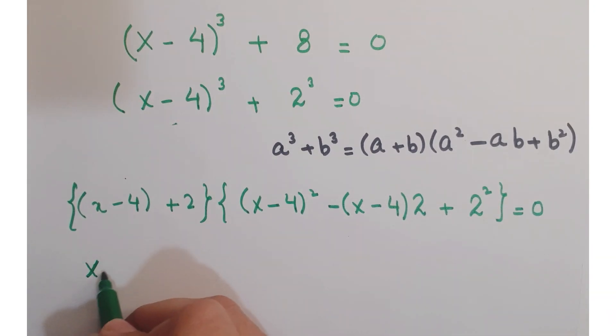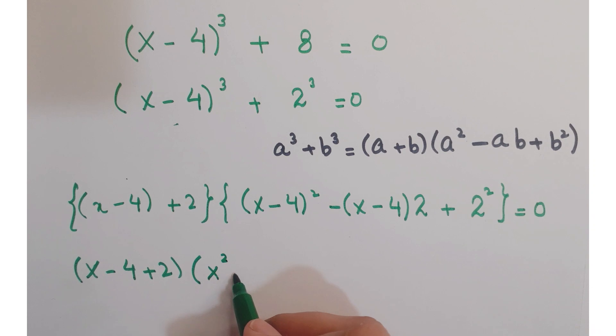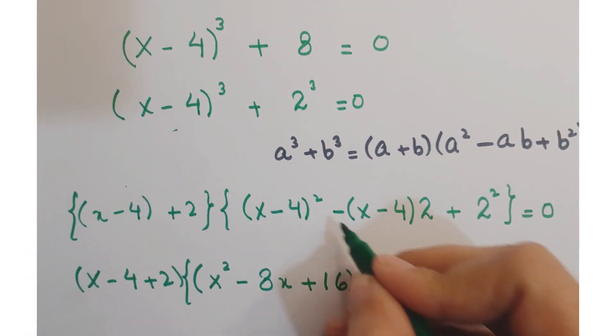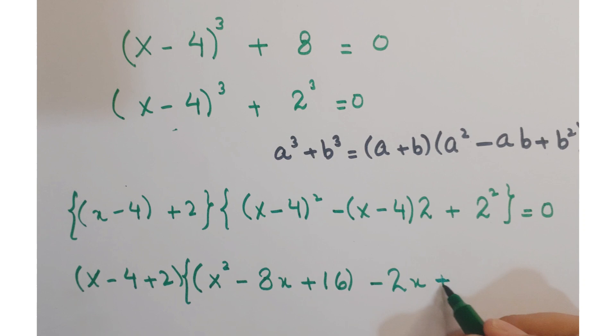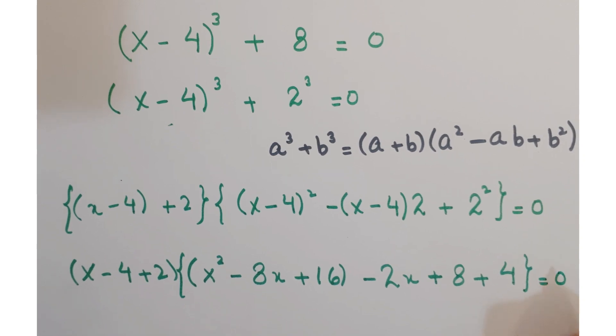You can write it as x minus 4 plus 2. Here you can expand it by applying the algebraic identity a minus b whole square. You can write it x square minus 8x plus 16 minus. This is 2x and this minus minus makes plus, and 2 into 4 is 8 plus this 2 square is 4 equals 0.